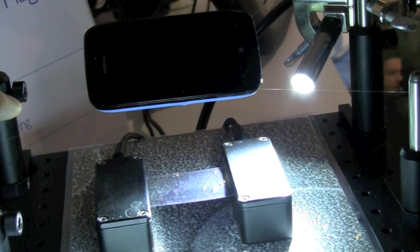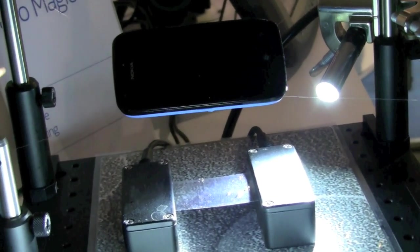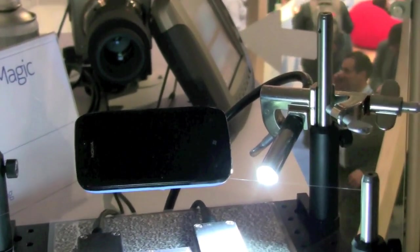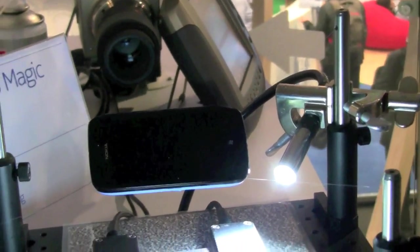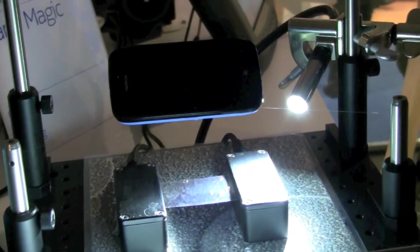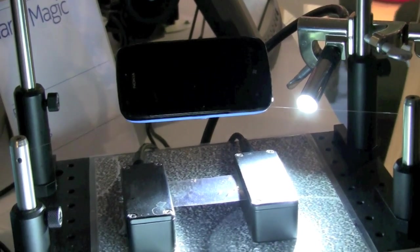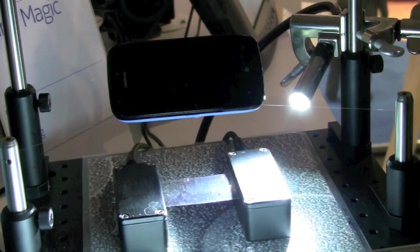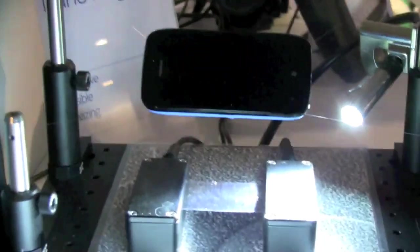But underneath the telephone there's a layer of graphene. And graphene is one atom thick material. It can be made to be see-through. It's also very flexible and it's conductive.